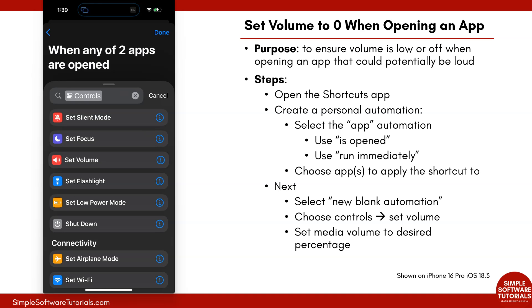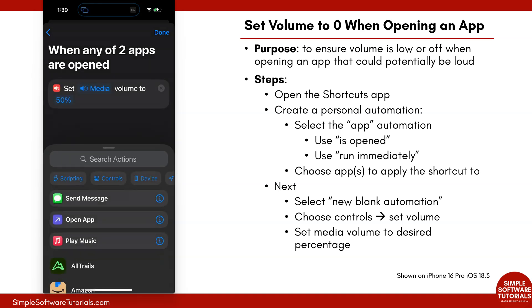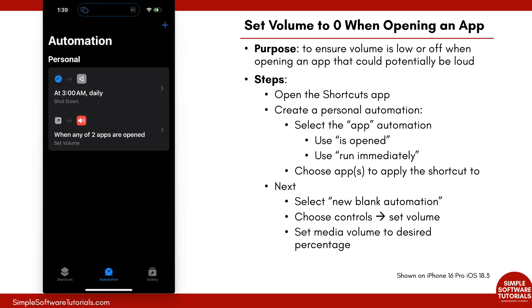All I need to change here is the percentage — you can select from 0 to 100. I'm going to tap on the 50 and slide that down to 0. Set it to whatever is comfortable for you; maybe you want 5 or 10. It's just the volume percentage. Then tap Done and tap Done again.